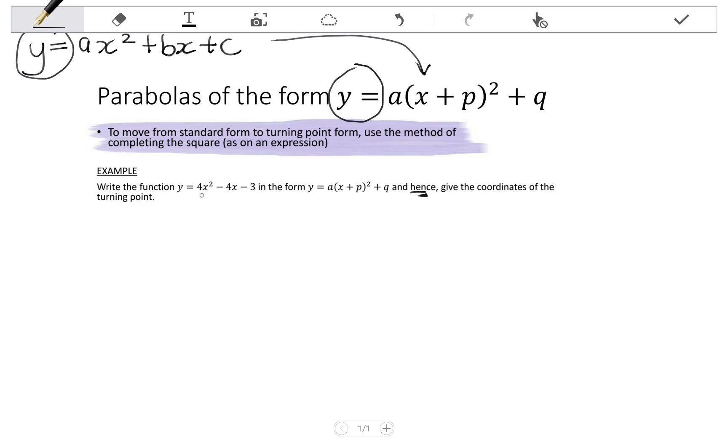Okay, so let's start by writing our parabola's equation in turning point form. To do that, we are going to complete the square as on an expression. So I write out my equation, it's y equals 4x squared minus 4x minus 3.